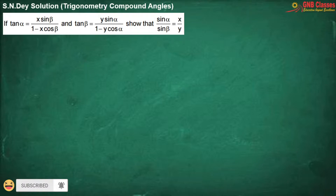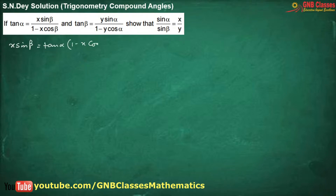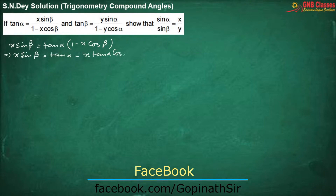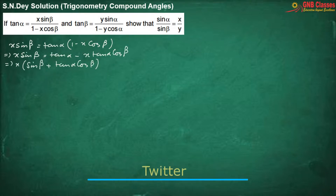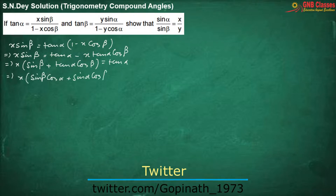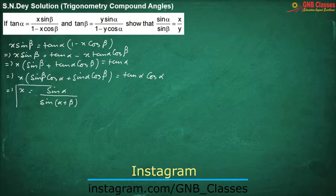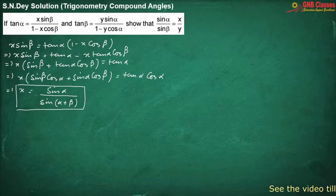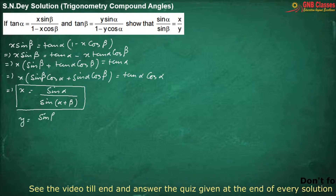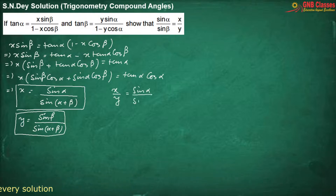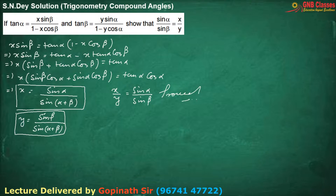In this problem, from the first condition we are getting an equation, and our goal is to find out x from this equation. This is what we got for x. Similarly, you can find out y. Now by dividing the corresponding sides we are getting the result. Is it okay? Let us move for the next problem.